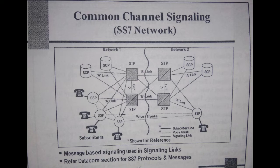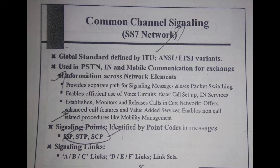Let's discuss the components of the network and how Common Channel Signaling works. SS7 is a global standard defined by the International Telecommunication Union, ITU. It is used in PSTN, IN, and mobile communication for exchange of information across network elements. It uses packet switching, enables efficient use of voice circuits, faster call setup, IN services — intelligent network — and establishes, monitors, and releases calls in the core network. It also offers enhanced call features, value-added services, and enables non-call related procedures like mobility management.